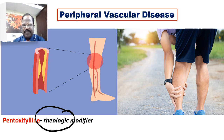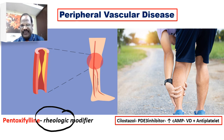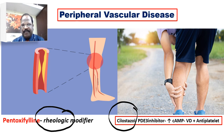One important adverse effect of pentoxifylline is that it causes severe nausea and vomiting. Recently, we have a newer drug for peripheral vascular disease called cilostazol — a selective PDE3 inhibitor — acting by accumulating cyclic AMP, having vasodilatory and antiplatelet action, very useful for managing claudication pain in patients with peripheral vascular disease.